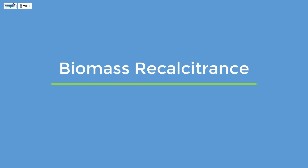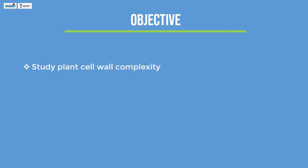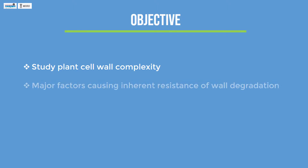Biomass recalcitrance. The major objective of this module is to study the plant cell wall complexity and the important factors causing the inherent resistance of wall degradation.